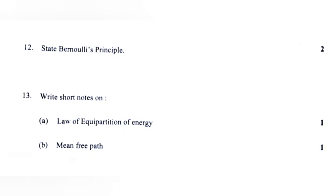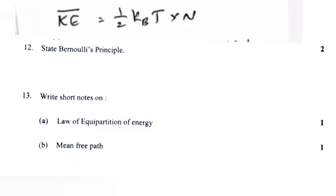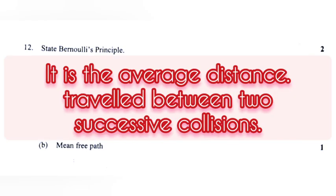Question 13: Write short notes on A. Law of equipartition of energy. Answer: The total energy of a molecule in equilibrium is equally distributed in all possible energy modes, with each mode having an average energy. B. Mean free path. Answer: It is the average distance traveled between two successive collisions.